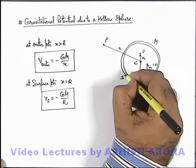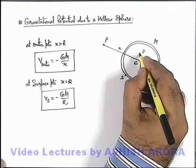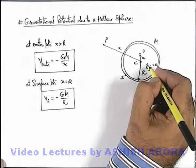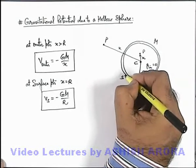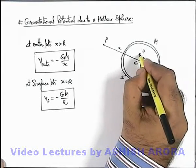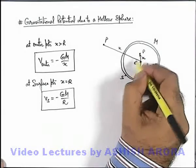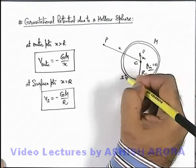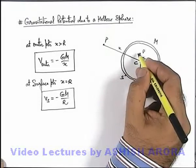That means from surface to point P gravitational field is zero. So whenever a mass is displaced from point S to inside P, no work will be done as gravitational field is zero. No force is acting on it, so no work will be done in any displacement.